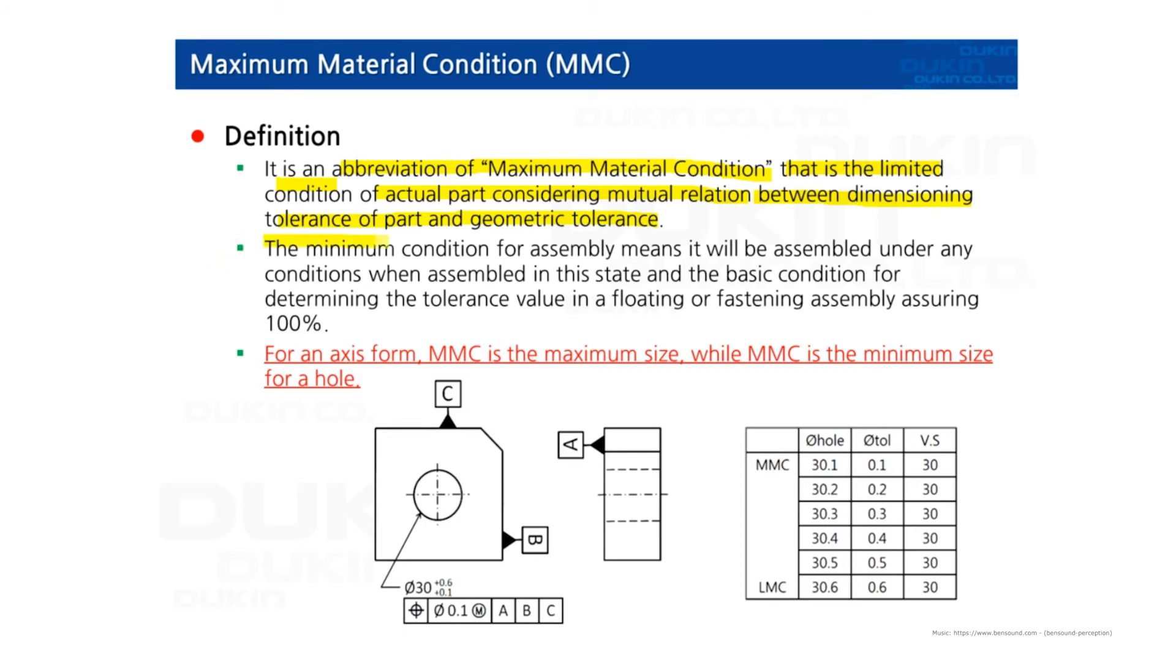So the minimum condition for assembly means it will be assembled under any conditions when assembled in this state, and the basic condition for determining the tolerance value in a floating or fastening assembly assuring 100%.